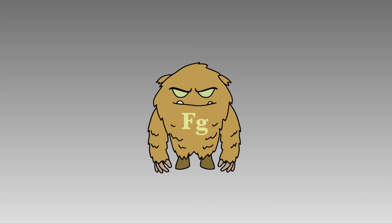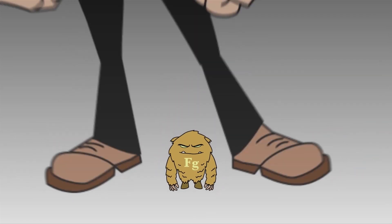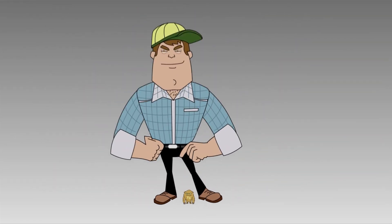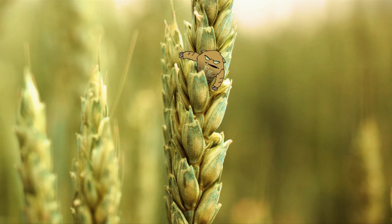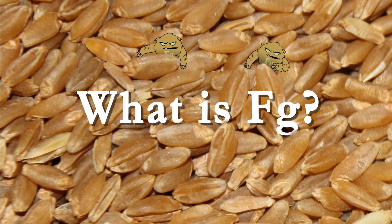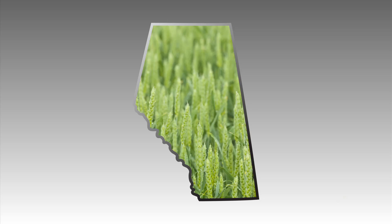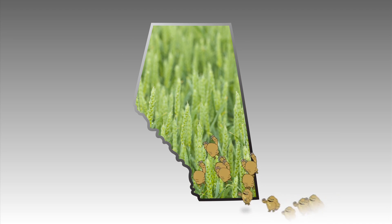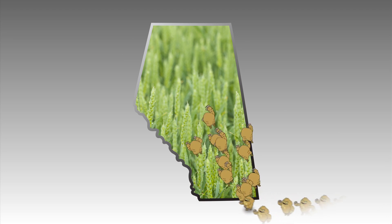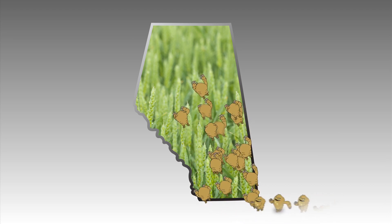This Fusarium pest must be stopped, and we need your help. Don't assume it's not in your backyard. Fusarium causes significant losses in cereals and corn. This menace has been sneaking into Alberta, especially in irrigated areas.